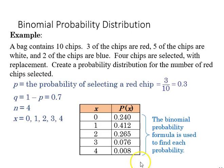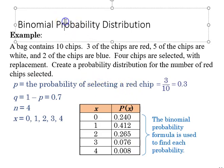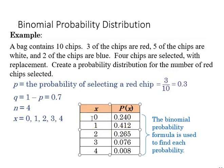Using the same example we can also create a probability distribution, and with that the probability of getting zero red chips, one, two, three, or four red chips is listed here, and we've got the probability laid out.